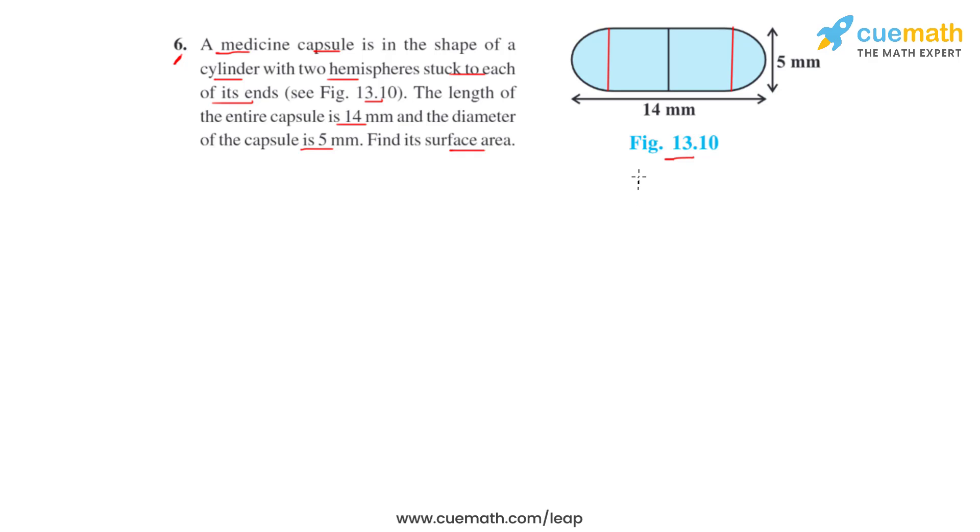That is, D, which is the diameter, equals 5 mm. Therefore the radius r for the hemisphere and for the cylinder will be equal to half of it, that is 5 by 2 mm.